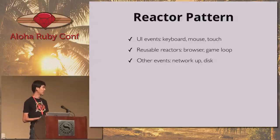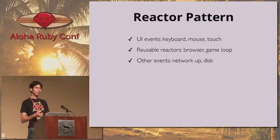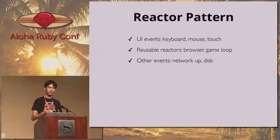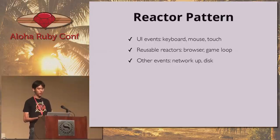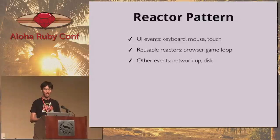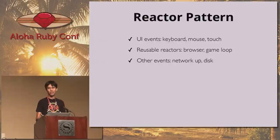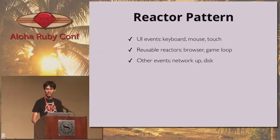Certain domains naturally lend themselves to this evented reactor pattern. When we're talking about UI events — keyboard, mouse, and touch — there's no way for us to anticipate when those are going to happen. So you have to define the handlers and register them at the beginning of your program. These reusable reactors save us a lot of time and plumbing. If we didn't have them, we'd spend all our time writing mouse detection instead of building useful things. And even though it's intuitive for UI events, you can define events for arbitrary things — like when wireless becomes available or when there's data available on disk for reading.